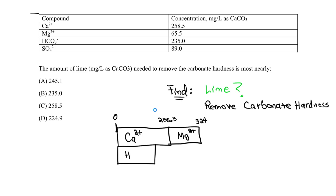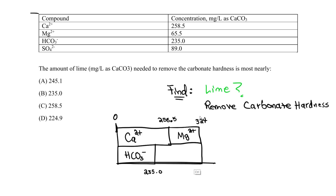The bicarbonate (alkalinity) is 235.0 mg/L as CaCO₃, and the sulfate is 89.0. Adding 235 + 89 gives us 324, which matches the cation side. So the bar diagram balances — total cations equal total anions at 324 mg/L as CaCO₃.